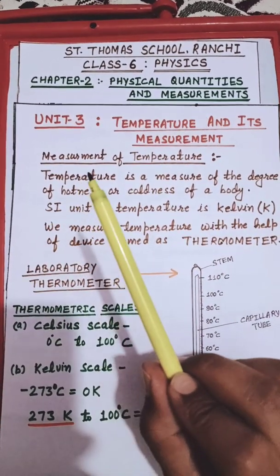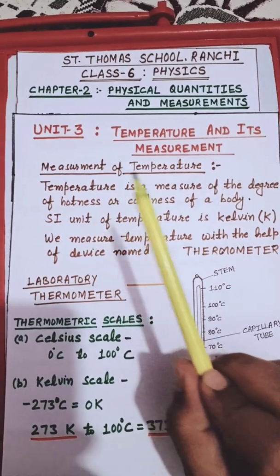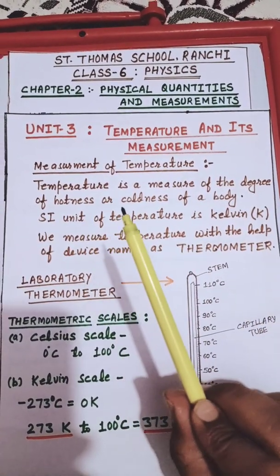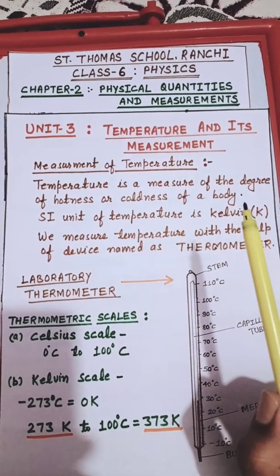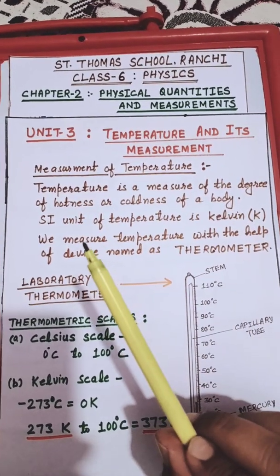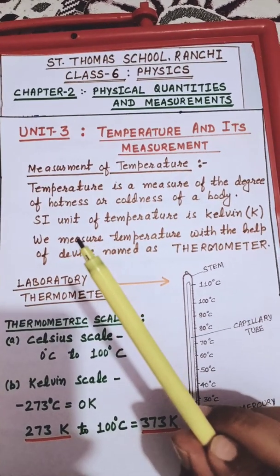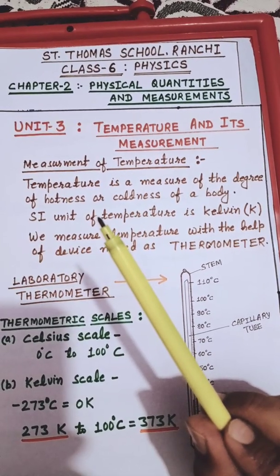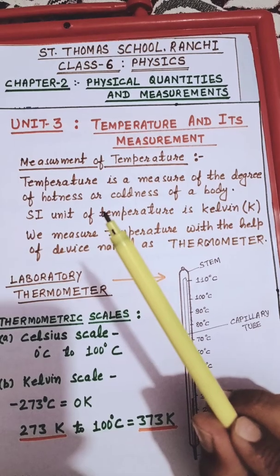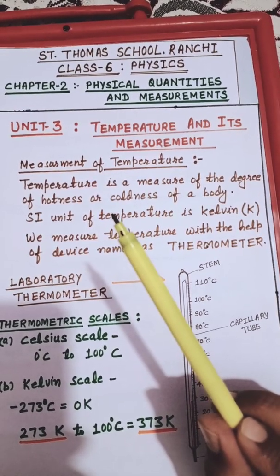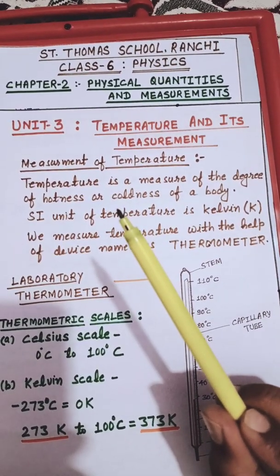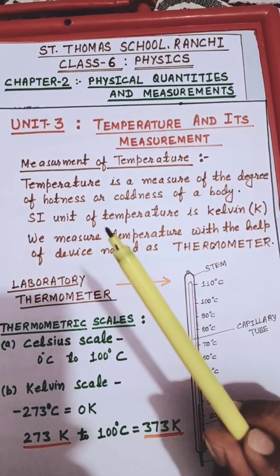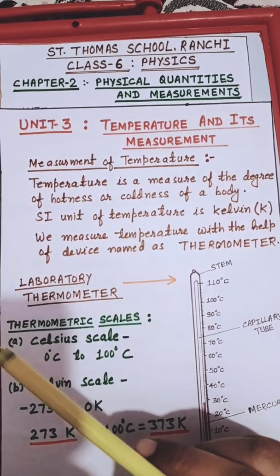First we should understand what is meant by temperature. Temperature is a measure of degree of hotness or coldness of a body. For example, when you feel ice it is cold, and when you feel boiling water it is hot. So temperature is a measure of degree of hotness and coldness of an object.